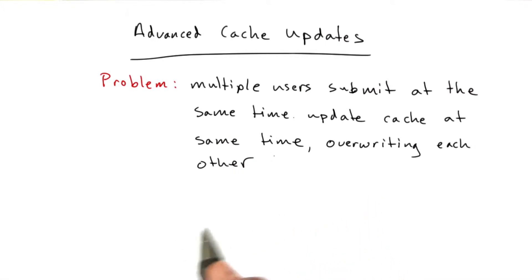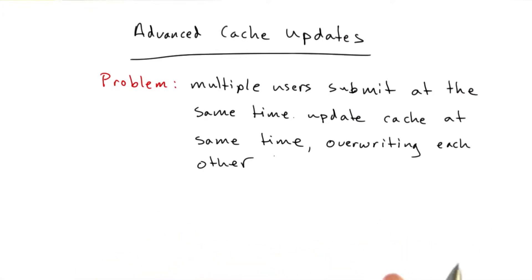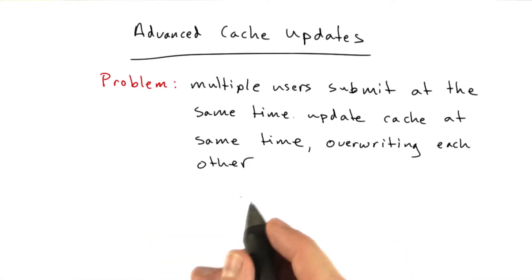This is a type of race condition where two updates come in at the same time, and we don't know what order to handle them in, and they both conflict. Basically, one tramples the other.